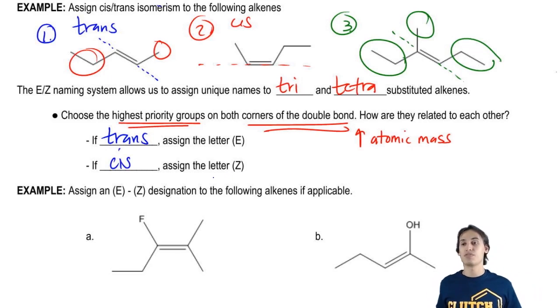So basically Z is just a fancy way of saying cis with three or more substituents. E is a fancy way of saying trans with three or more substituents.